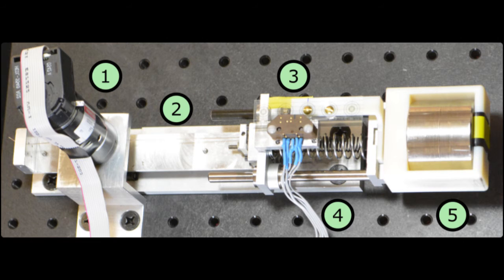Experiments were performed on a 1 degree of freedom series elastic actuator. A DC motor (1) controls the position of a linear slider (2). A bidirectional spring (4) has been placed between the slider and the load, where the spring's displacement is measured by a linear encoder (3).